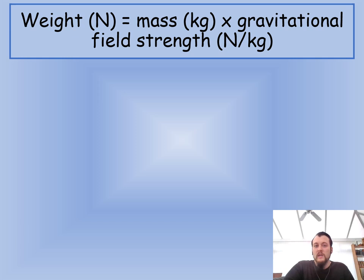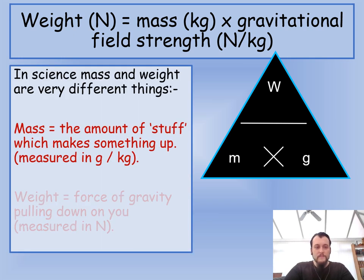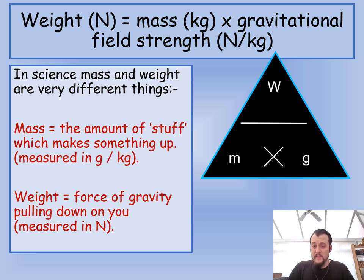So the equation we use is weight equals mass times gravitational field strength. So make sure you write that down for me, because that's a super duper important equation. The equation triangle, because I know quite a few people are quite partial to an equation triangle. I myself think they're rather nice. And there are key definitions. Again, I've said it multiple times. The reason I've said it multiple times is because we still get it wrong all the time. I still get it wrong all the time. I still go and weigh myself instead of mass myself, but that's probably just because it sounds weird.